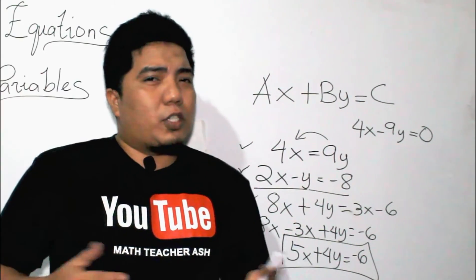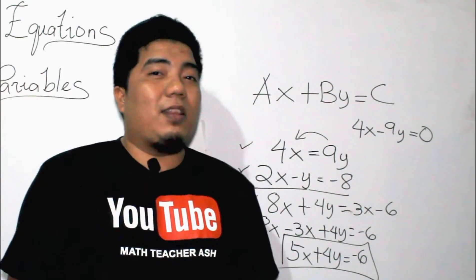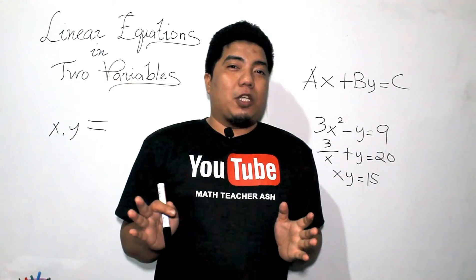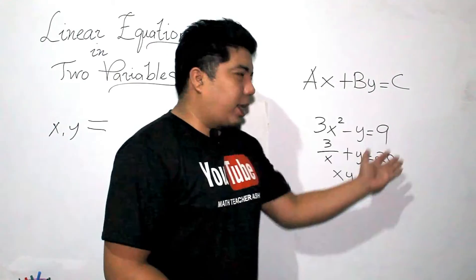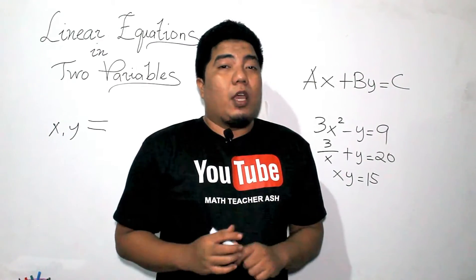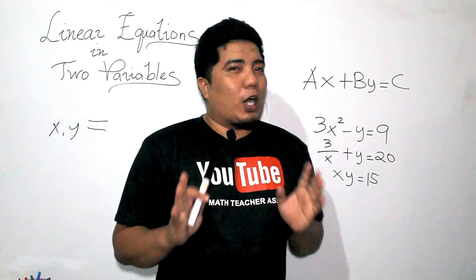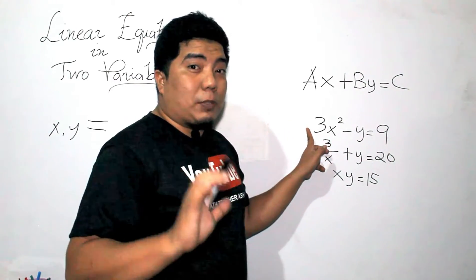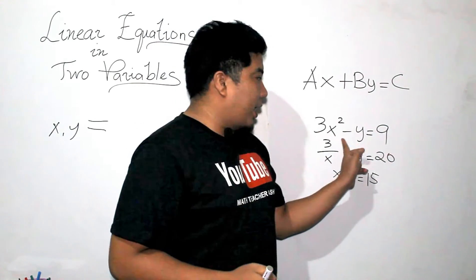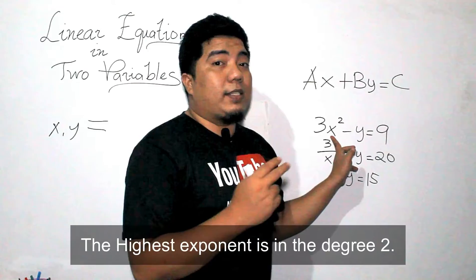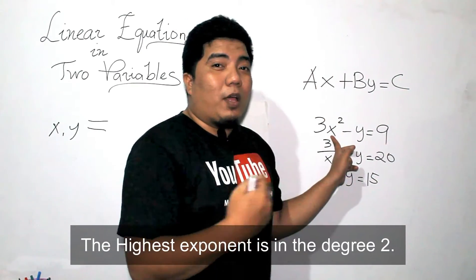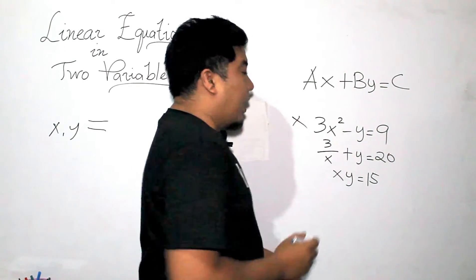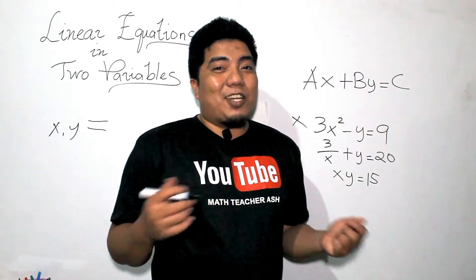Now, what are the things that tell us a certain given equation is NOT a linear equation in two variables? We have here 3 equations that are not linear equations in 2 variables. The first equation is not a linear equation in 2 variables because, while there may be 2 variables x and y, the x is to the power of 2 — meaning in the degree of 2. Therefore, this is not linear; instead, it is quadratic in form.